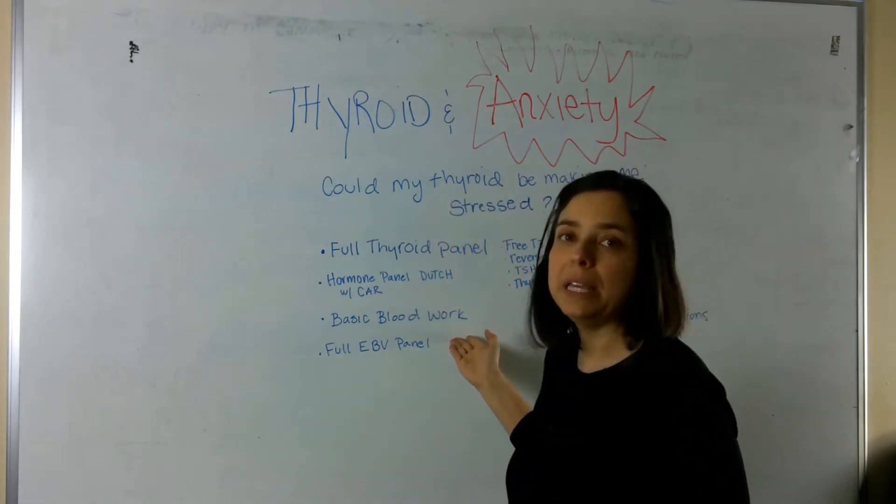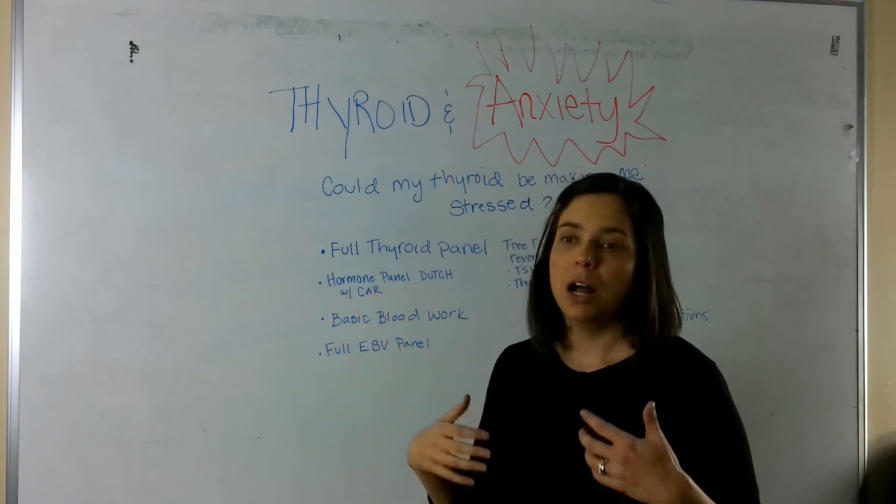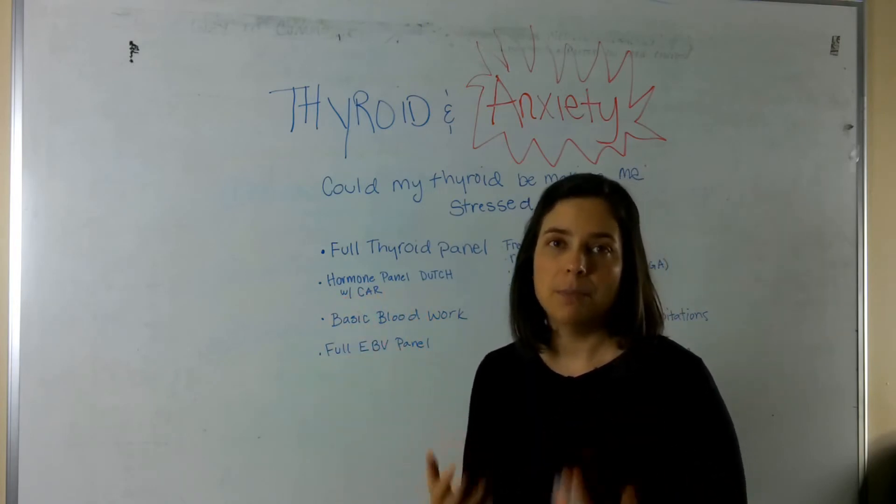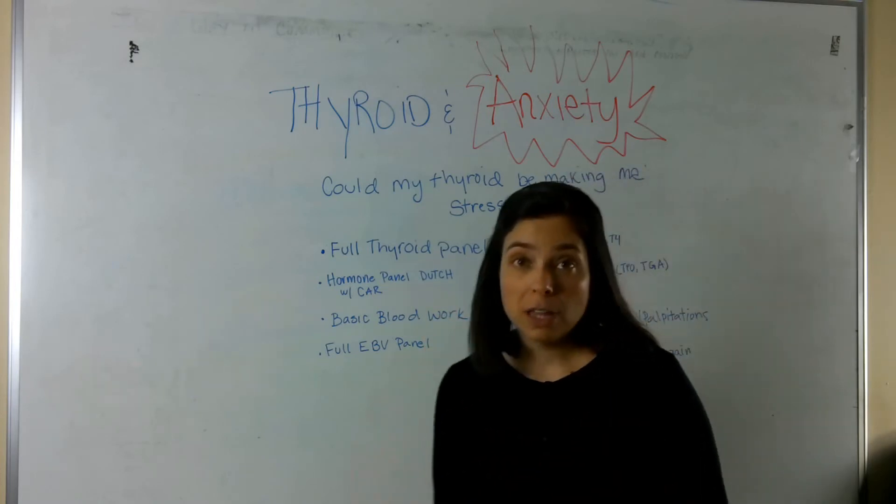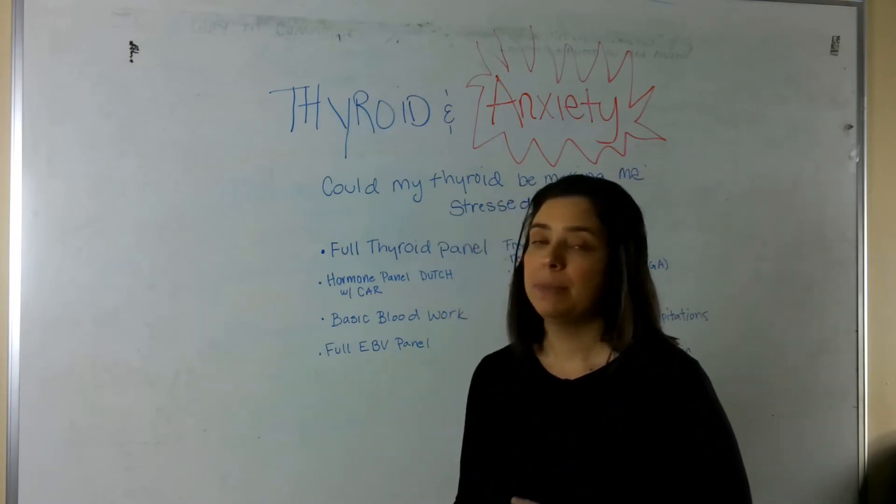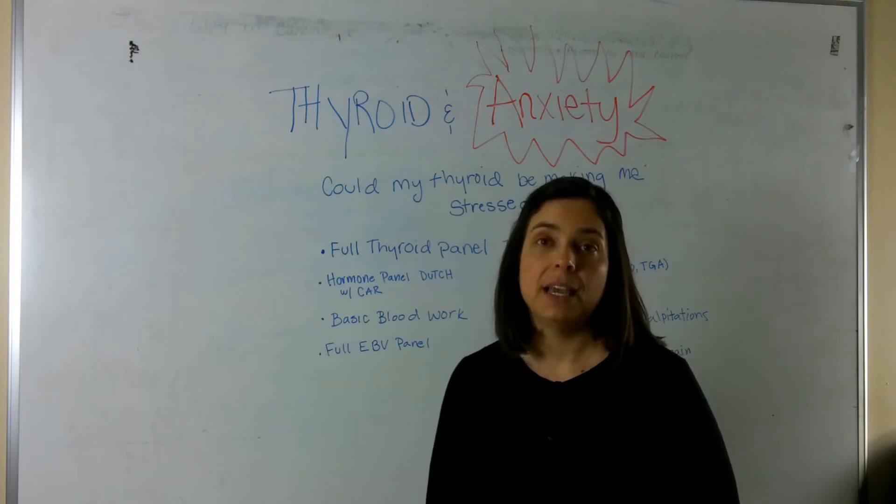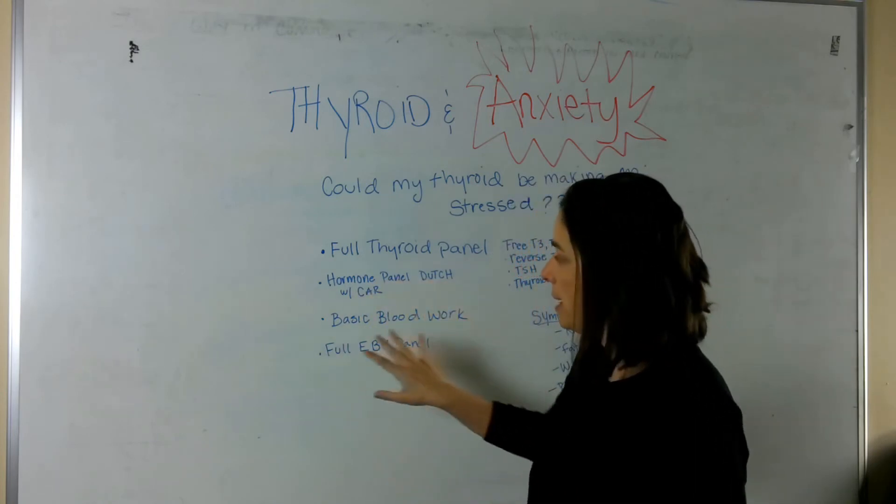Basic blood work. So, that could be your cholesterol, your blood count, something called a comprehensive metabolic panel. We might look at your iron levels. We might look at something called homocysteine to see what your B vitamin status is. So, we might run some of those kind of basic blood works.